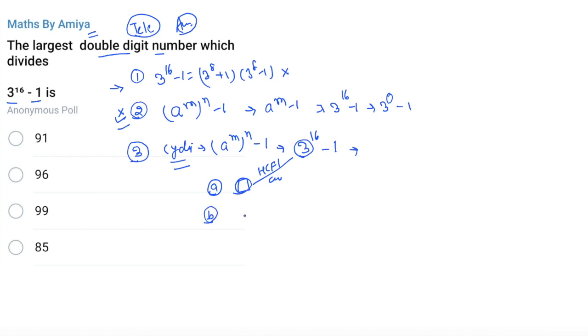The second one is the cyclicity. For the cyclicity, you need to check two factors. First, the base and the divisor should be co-prime. It means both HCF should be 1. Here the base is 3. But if you check, 96 has 3, 99 has 3. This is not the answer. You can eliminate these two directly.